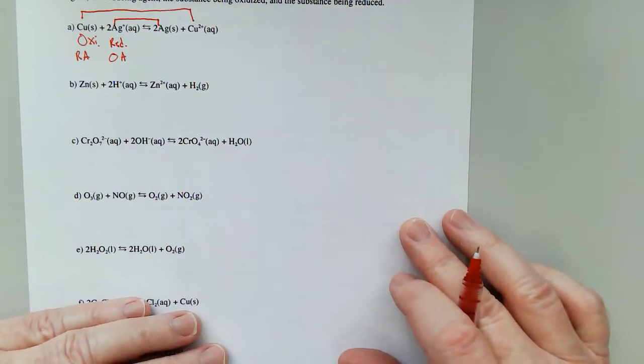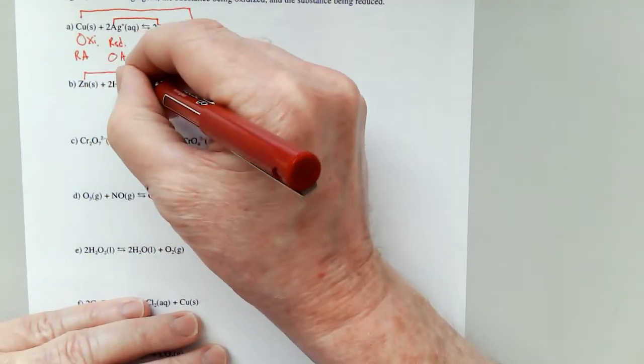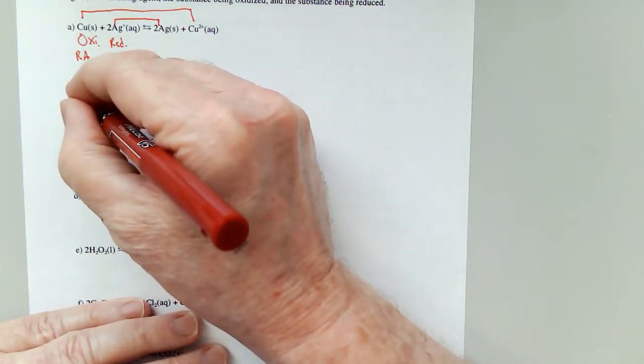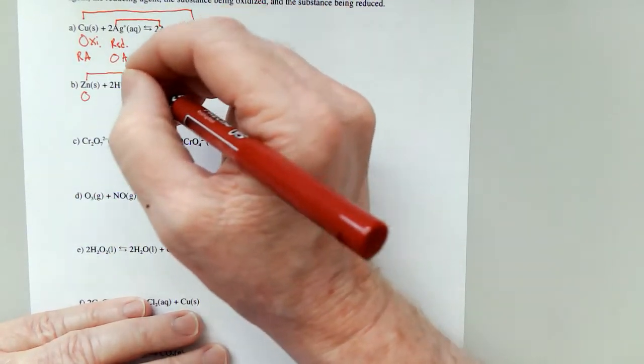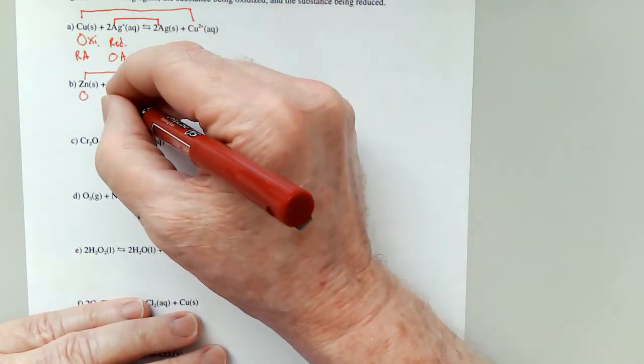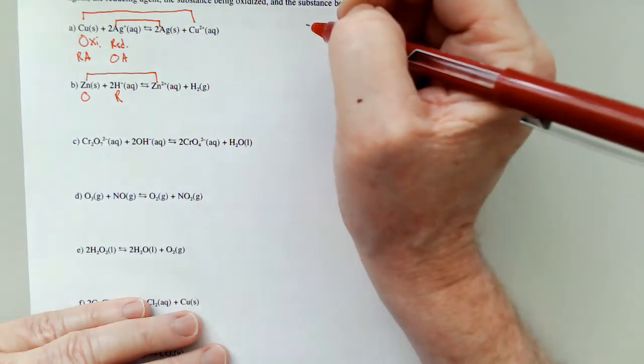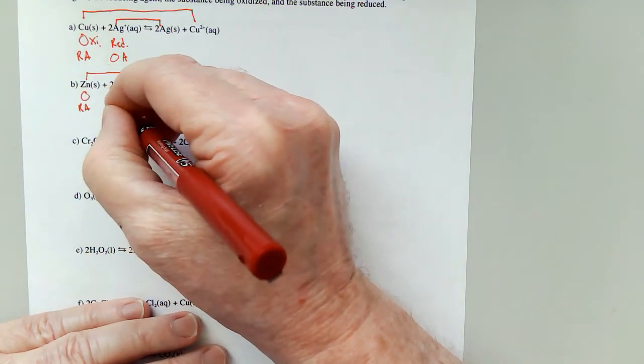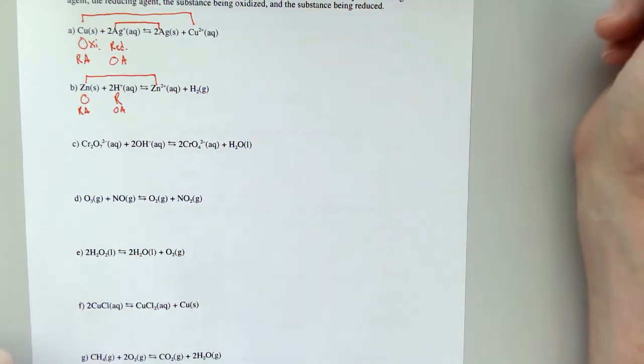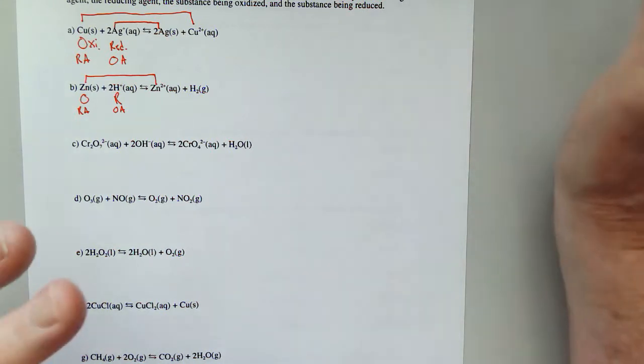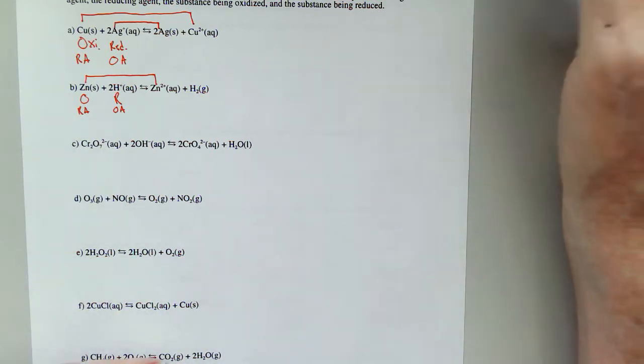So now, zinc is going from a zero to a plus two. That means it's oxidized. It has lost electrons. H-plus is going from a plus one to a zero. It's reduced. It's gaining electrons. That means this is the reducing agent. This is the oxidizing agent. Once you have identified a single species that changes, you're fine. You can identify all the others.